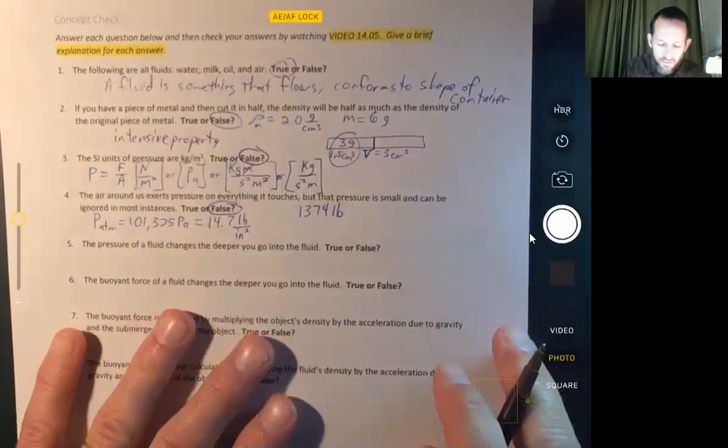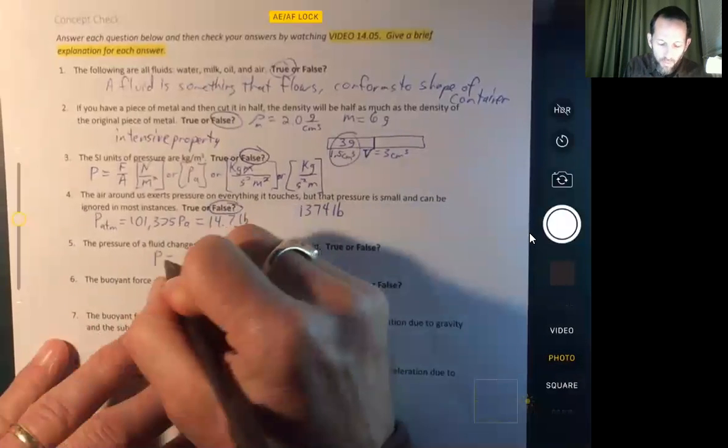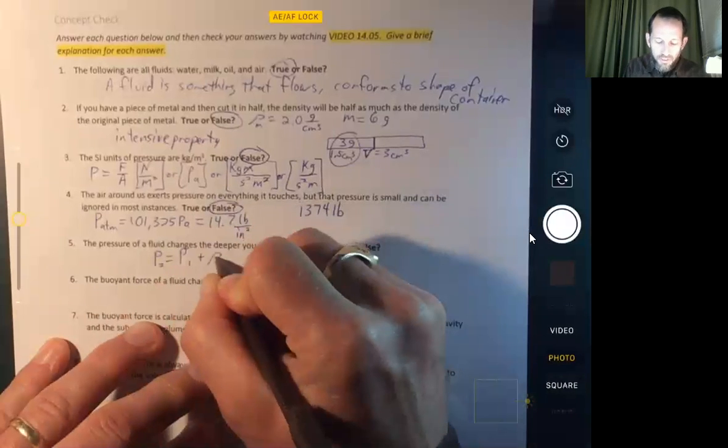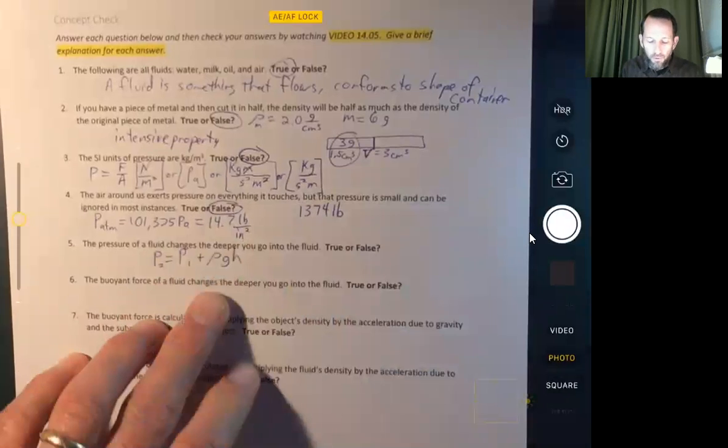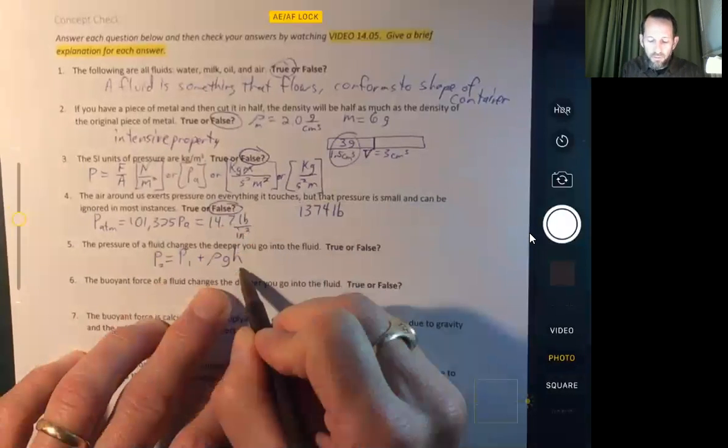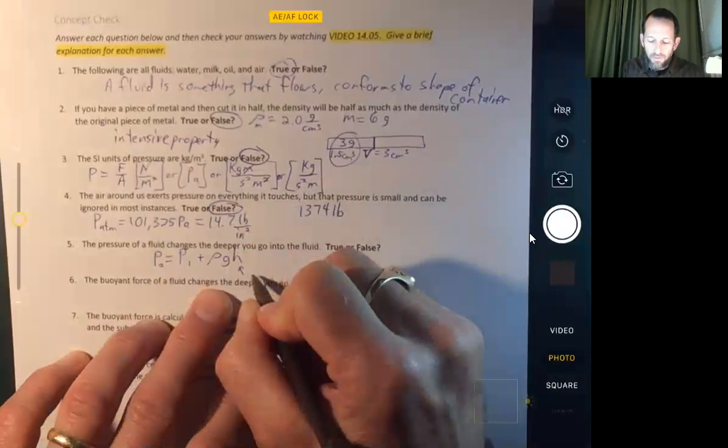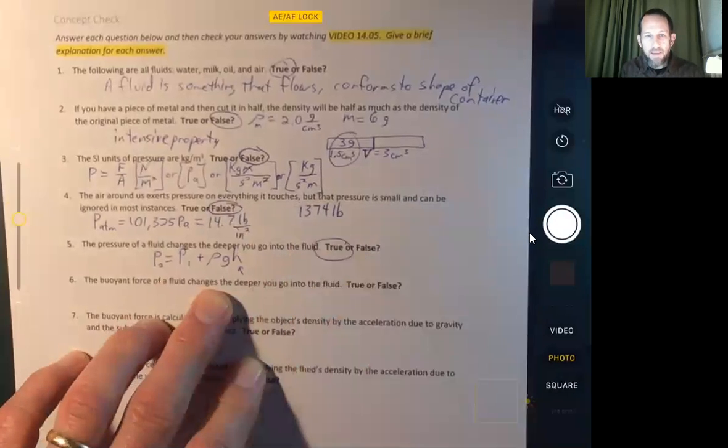The pressure changes the deeper you go into a fluid. Well, we know that P2 equals P1 plus rho GH, and so we can see that the pressure is absolutely dependent on how deep you go. This is the height of fluid above. So that's absolutely true.